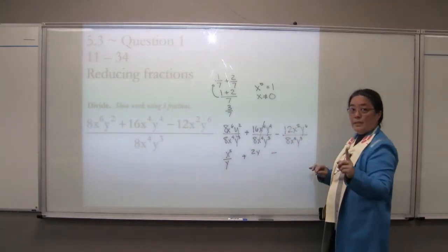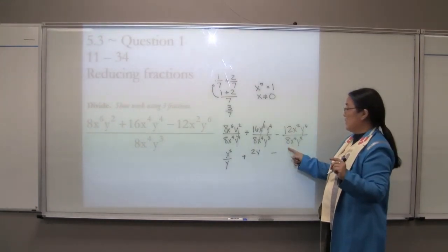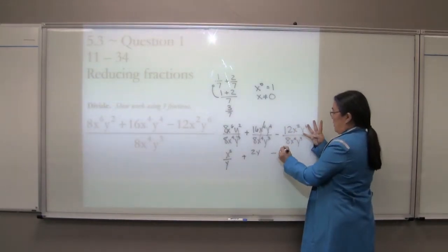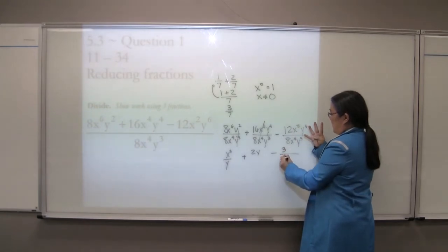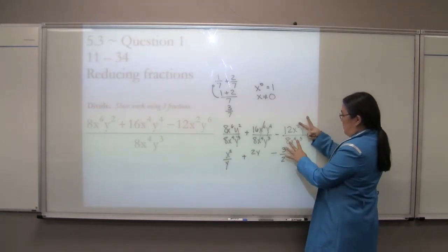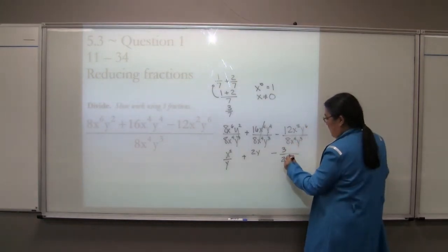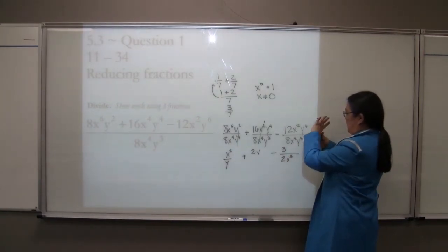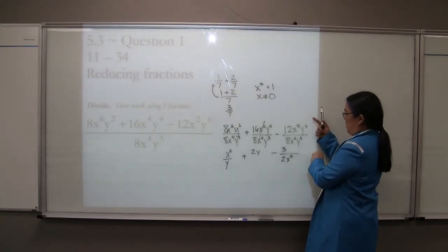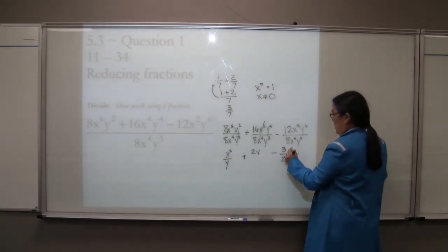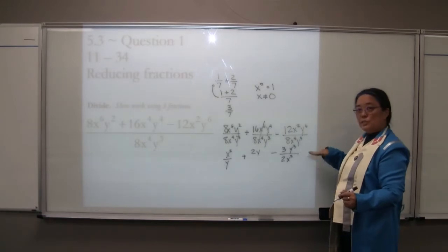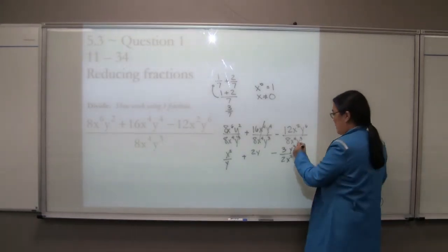Minus 12 over 8 — that is a fraction and it doesn't divide nicely. So we're going to divide by 4. 12 divided by 4 gives me 3, and 8 divided by 4 gives me 2. There are 2 X's in the numerator and 2 in the denominator — 2 of them will cancel, giving me 2 X's in the denominator. 6 Y's on the top, 3 on the bottom — 3 of them will cancel, giving me 3 Y's in the numerator. Work. Answer. Showing work using 3 little fractions — reduce, reduce, reduce. That is your answer.